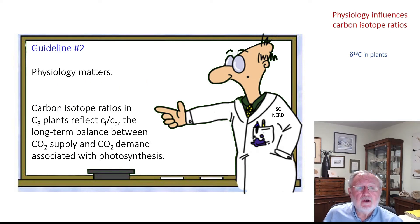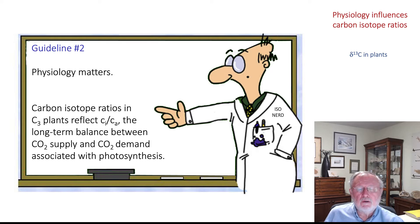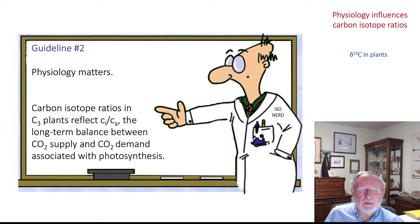So physiology matters. The carbon isotope ratio of C3 plants, which we'll focus on first, reflects the CI to CA ratio — that is, the intercellular to ambient concentrations of CO2 — which is the long-term balance between the supply of CO2 through the stomates and the consumption of CO2 in photosynthesis.